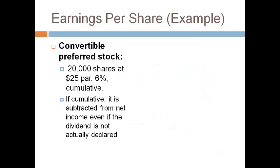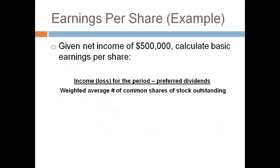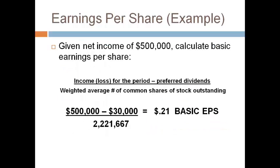This company has preferred stock, so we must compute the preferred dividend. The preferred stock is cumulative and the dividend is always subtracted for cumulative stock, even if the board does not declare the dividend, because the board can declare the cumulative dividend in the future. To compute the dividend, take the number of shares times the par to get total par; total par times the annual rate is the annual dividend. The preferred dividend is subtracted from net income, then divide by the weighted average number of outstanding common shares to get basic earnings per share — the amount of earnings attributable to one share of common stock.